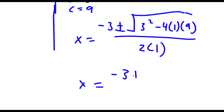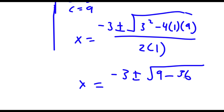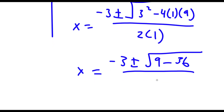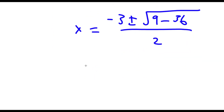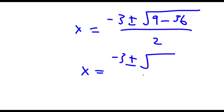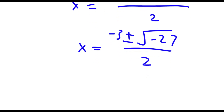So now I have x is equal to negative 3 plus or minus the square root of 3 squared, which is 9, minus 4 times 1 is 4, and 4 times 9 is 36, all over 2 times 1, which is 2. And now I have x is equal to negative 3 plus or minus the square root of 9 minus 36, that's equal to negative 27, over 2.